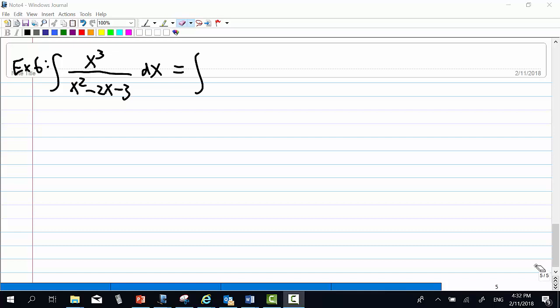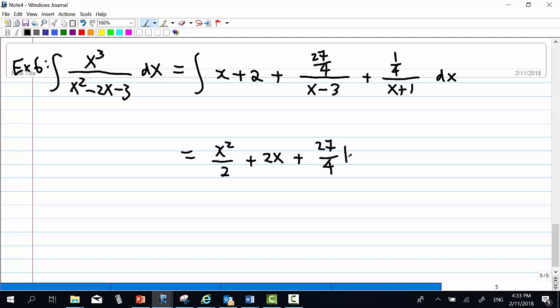We know after long division, this becomes x plus 2 plus, then we do partial fraction, which is A over x minus 3, which is 27 over 4 over x minus 3, plus B over x plus 1, which is 1 quarter over x plus 1. So then integrate term by term. Integrate x, get x squared over 2. Integrate 2, get 2x. Integrate 27 over 4 divided by x minus 3, you get 27 over 4 ln of x minus 3. And integrate 1 quarter divided by x plus 1 is 1 quarter ln of x plus 1. So finally, plus C.